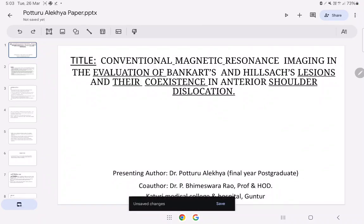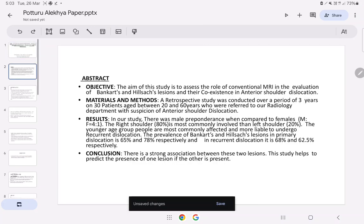Conventional Magnetic Resonance Imaging in Evaluation of Bankart and Hill-Sachs Lesion and their coexistence in anterior shoulder dislocation. Abstract: The aim of this study is to assess the role of conventional MRI in the evaluation of Bankart and Hill-Sachs lesion and their coexistence in anterior shoulder dislocation.